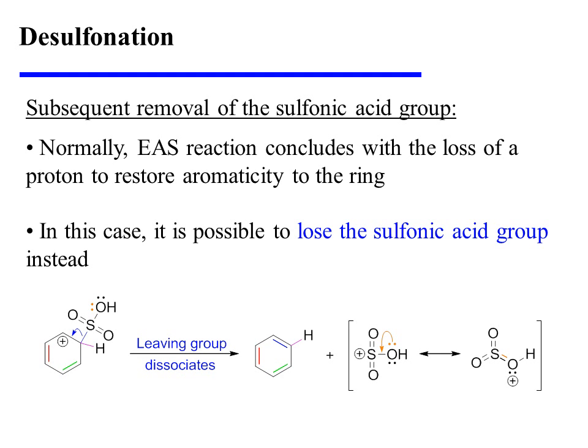Normally, an EAS reaction concludes with the loss of a proton to restore aromaticity to the ring. However, in this case, it is possible to lose the sulfonic acid group instead. That leaving group's dissociation also restores aromaticity to the ring, and the leaving group itself is resonance stabilized.